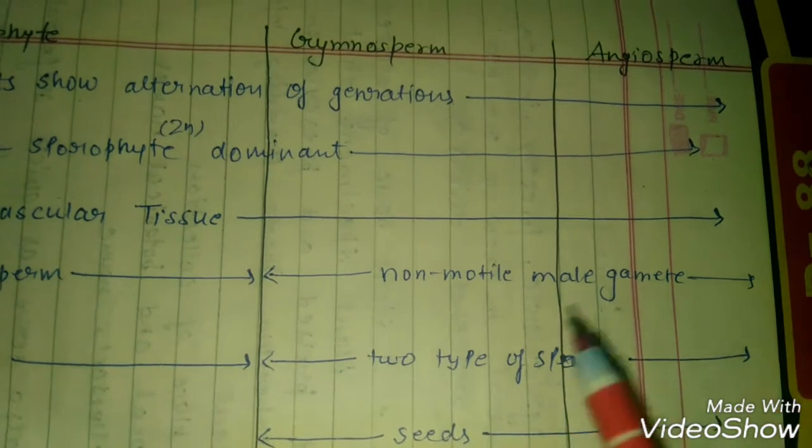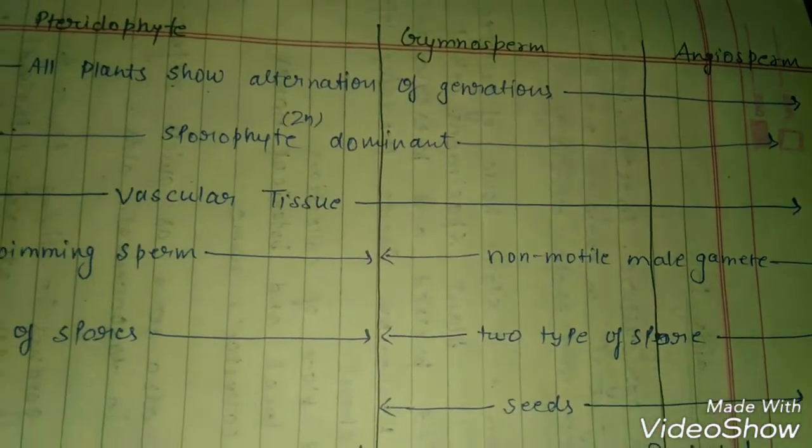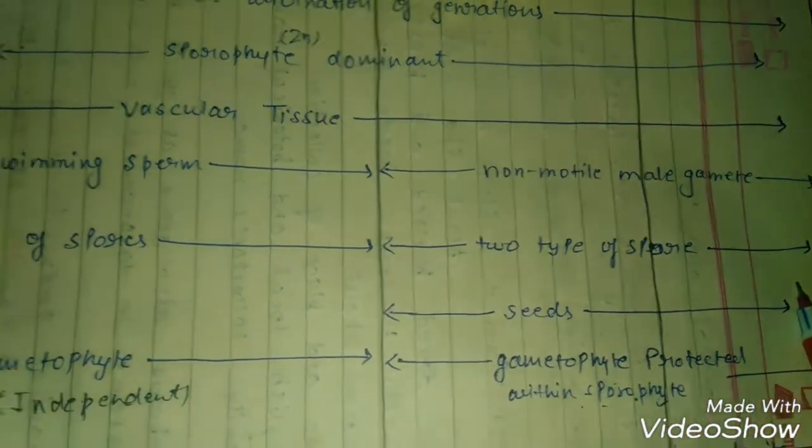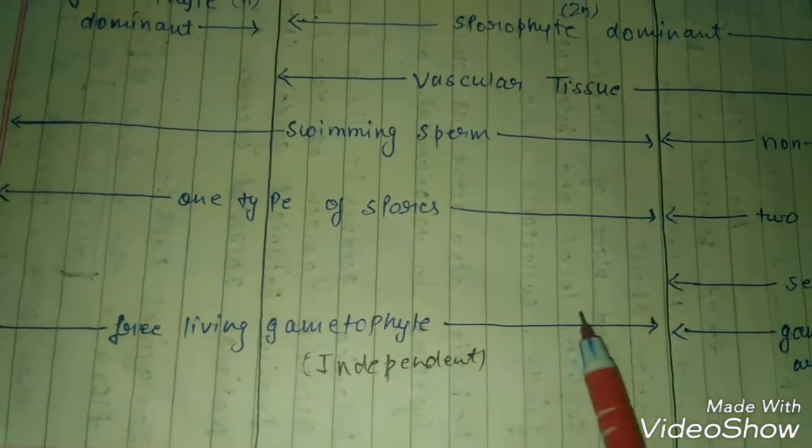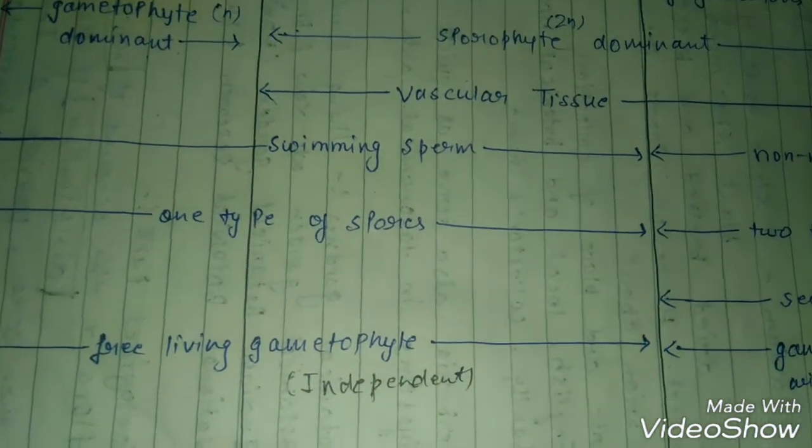Gymnosperm and angiosperm have two types of spores, heterospores, which is a precursor for the making of seed. So if you have a heterospores condition, then you will have seeds. This is the most important thing for NEET questions because students have a lot of confusion.